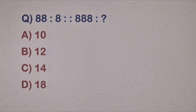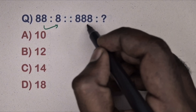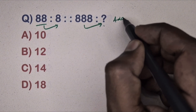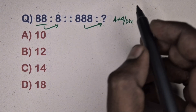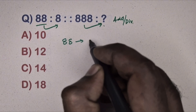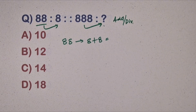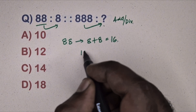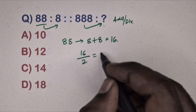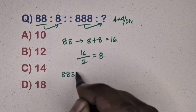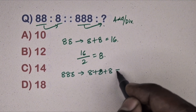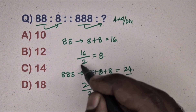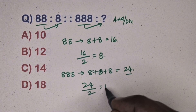Next question: 88 is related to 8, 888 is related to which number? This is the addition and division method. Take 88, add individual digits to get 16, divide by 2 to get 8. Same way, take 888, add individual digits to get 24, divide 24 by 2 to get 12. Option B is the correct answer.